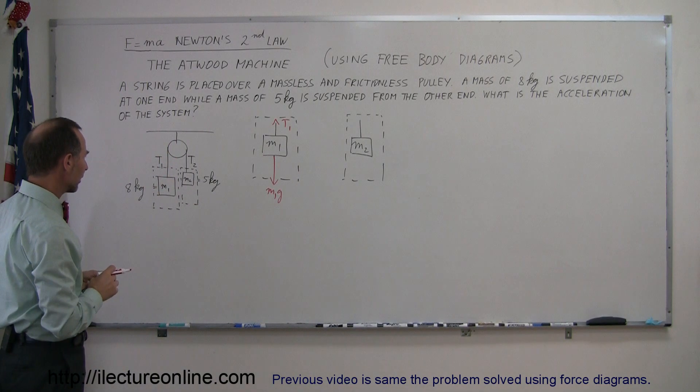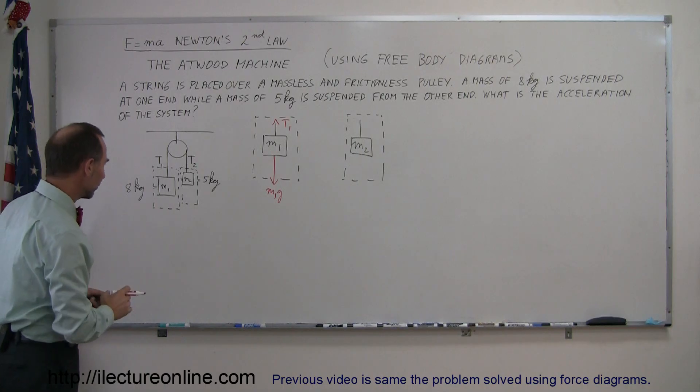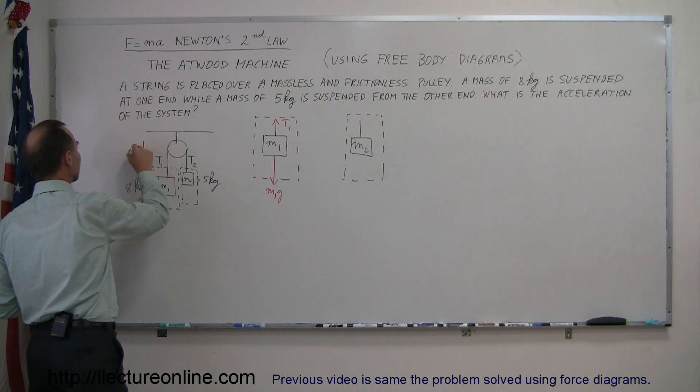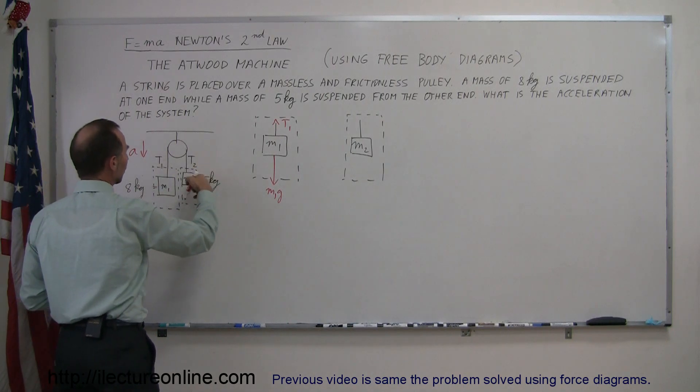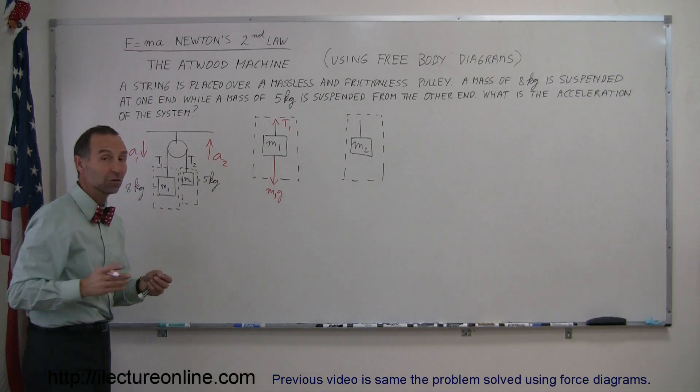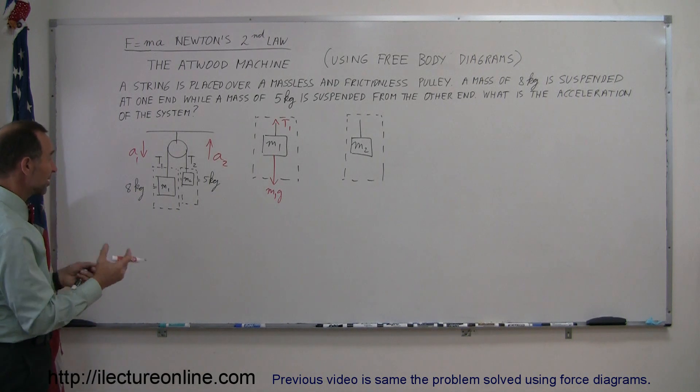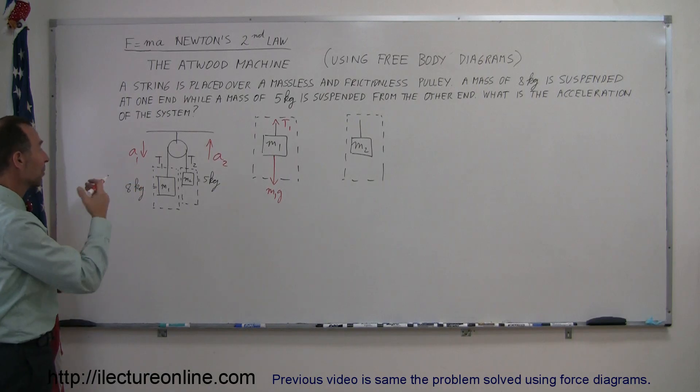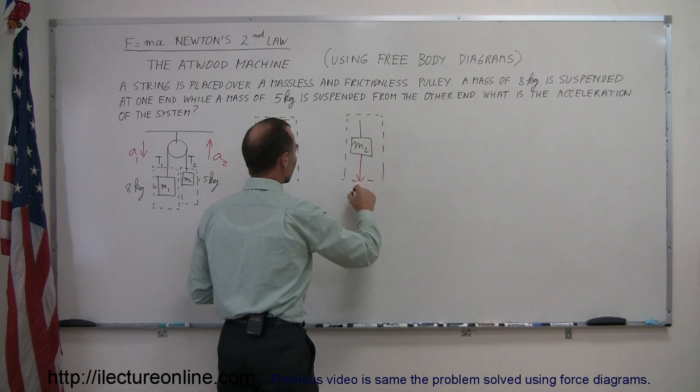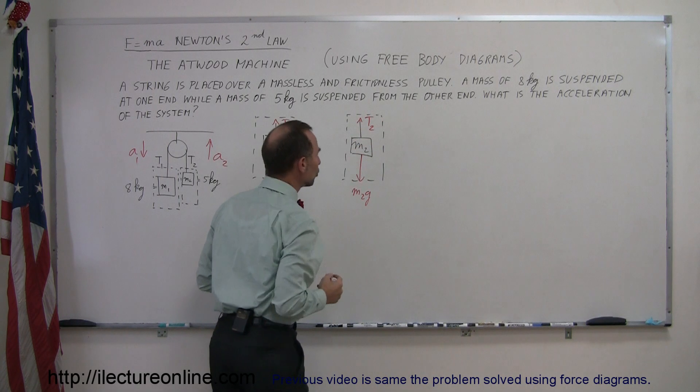We realize that this whole system will accelerate. Since m1 is bigger than m2, we can assume that the acceleration will be this way. We'll call that A going in this direction. This mass will accelerate upward, so we'll call that also A. We'll call this A1 and A2. Since the two masses are attached to a string, the acceleration magnitude will be the same. They'll just be in opposite directions. On this one here, we have the force of gravity pulling down, which is m2g, and then we have the tension pulling up, T2.